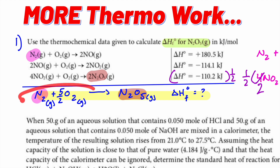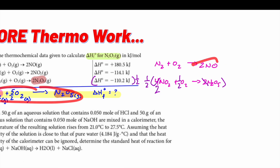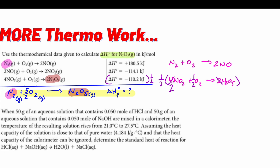Since NO is already on one side and I want it to cancel, I don't flip the equation. I write: 2NO + O₂ → 2NO₂. Now checking: my NOs are gone, my NO₂s cancel, and what's left is N₂, N₂O₅, and five-halves O₂. There's my final equation.